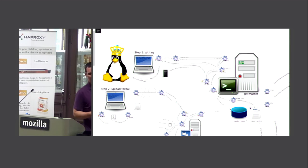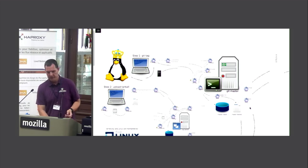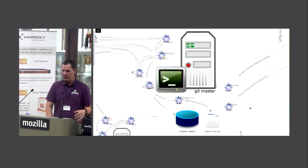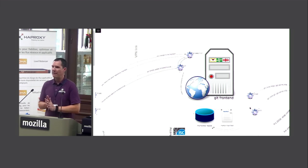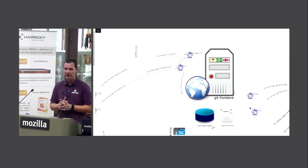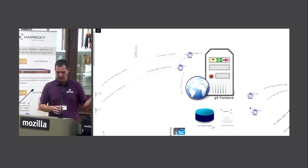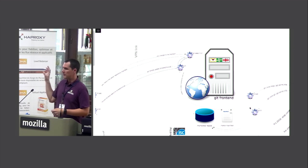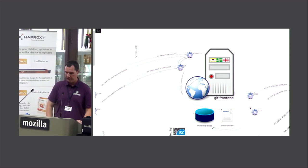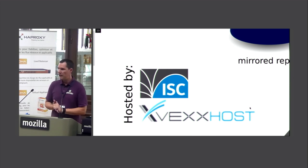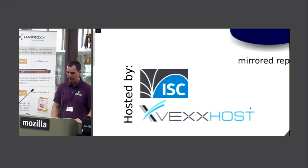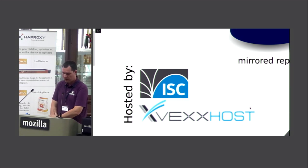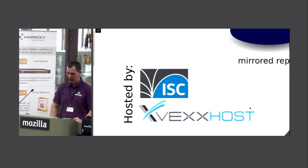Once the git master stage is complete, we need to get information from the git master to the git front ends. We currently have three front ends: one in the San Francisco Bay Area hosted by ISC (Internet Systems Consortium, who make the BIND name server), one in Portland hosted by the Linux Foundation, and one in Montreal hosted by Vexhost — our most recent front end. Vexhost is a cloud provider, but for us they let us host real hardware.